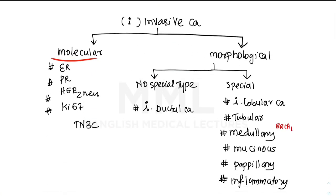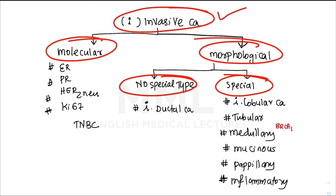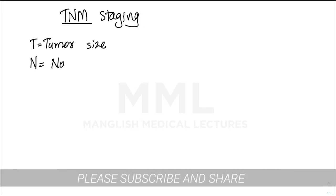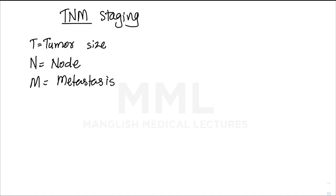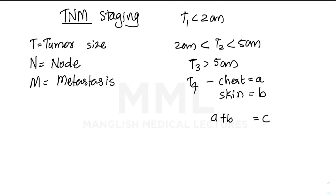Now let's briefly discuss TNM staging of breast cancer. T for tumor size: T1 is less than 2 cm; T2 is greater than 2 but less than 5 cm; T3 is greater than 5 cm; T4 is subdivided — T4A for chest wall involvement, T4B for skin involvement, T4C for both chest and skin involvement, and T4D for inflammatory type carcinoma. N is for lymph nodes and M for metastasis.